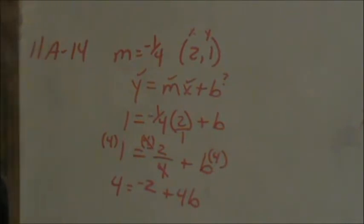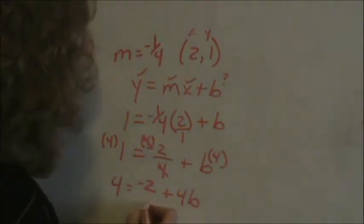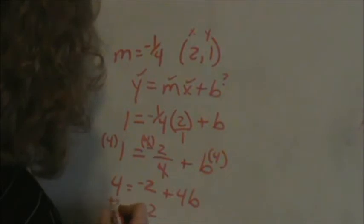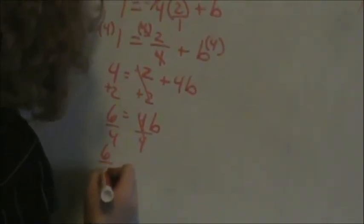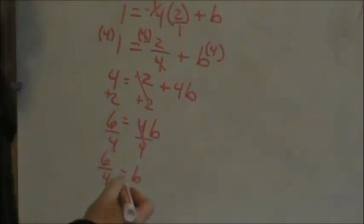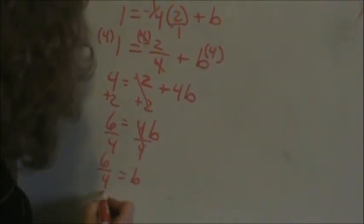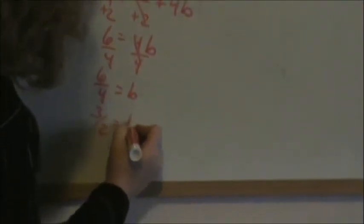Now it's just using algebra to solve. Numbers on one side, letters on the other. Add 2 to get rid of that. 6 equals 4b. Now divide your 4 over. 6 fourths equals b. Always reduce fractions. Both of those are reduced by 2. So we get 3 halves is b.